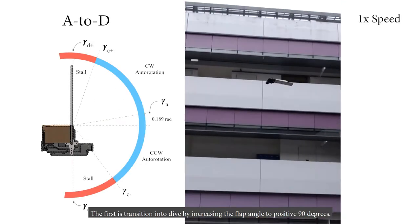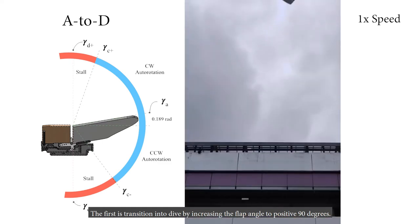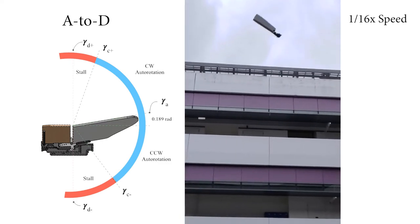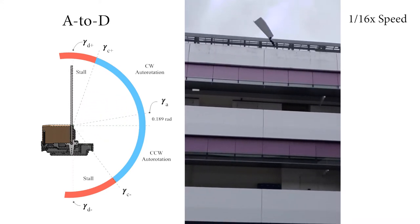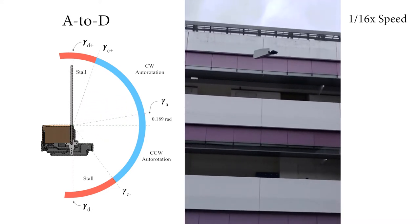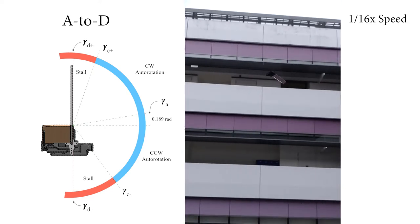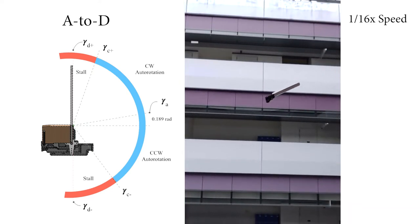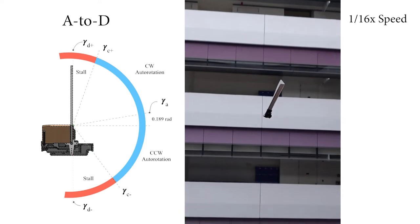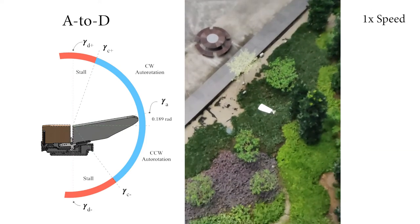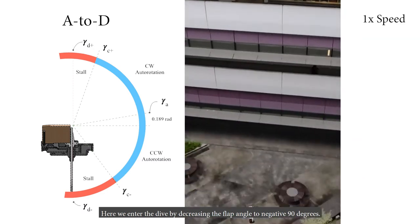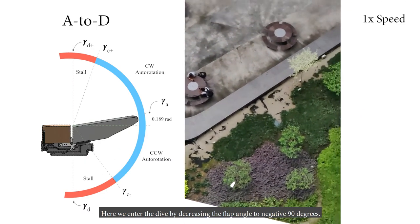Here, we can see the transitions in slow motion. The first is transition into dive by increasing the flap angle to positive 90 degrees. Here, we enter the dive by decreasing the flap angle to negative 90 degrees.